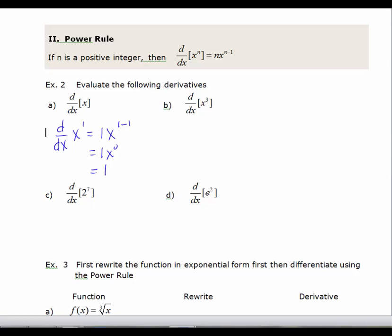So the derivative of x is just 1. And that makes sense because if you think of this function, if you think of f(x) equals x, the slope is equal to 1.